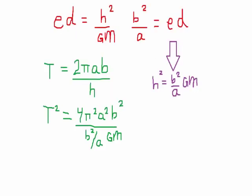We now go back to our original expression for the period. By squaring both sides, we get this expression here. We can then make the substitution for h that we just determined, and voila! We now have an expression relating the period of the orbit to the cube of the length of the semi-major axis.